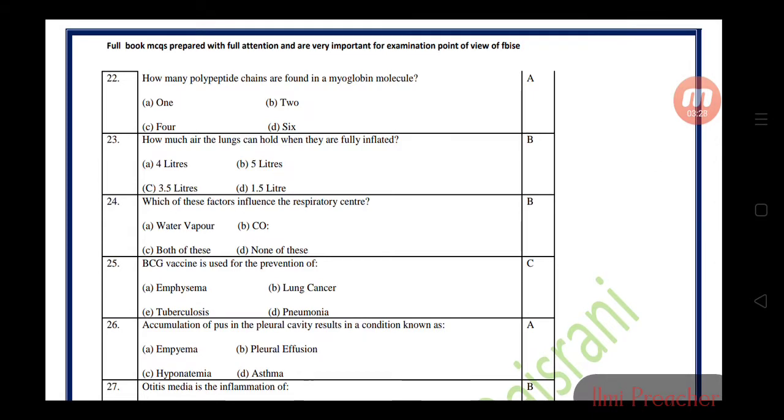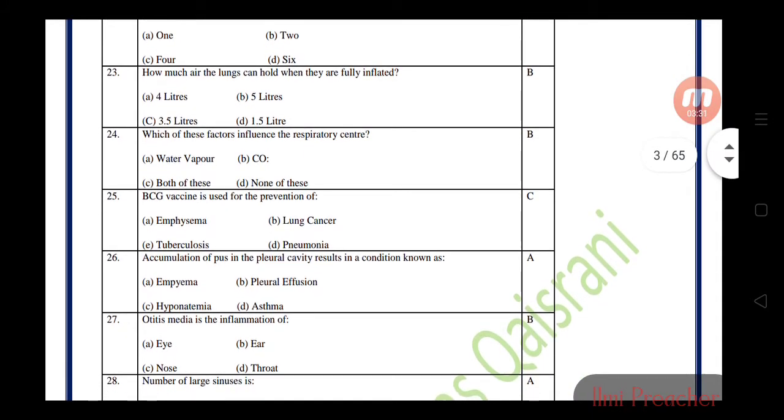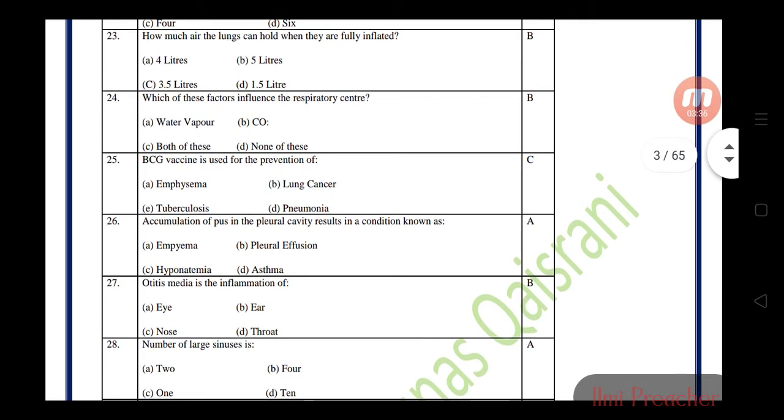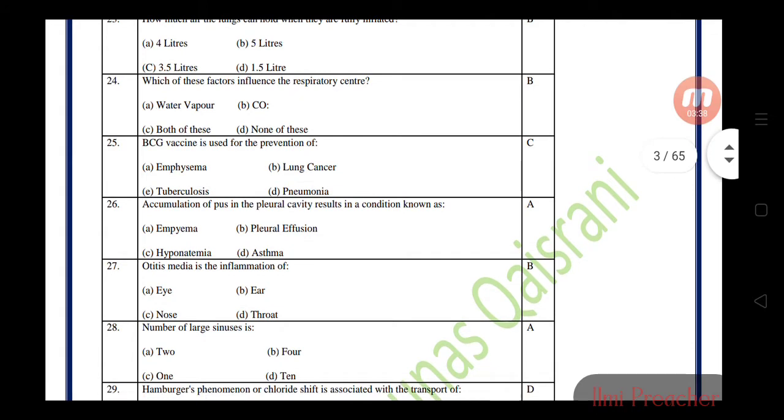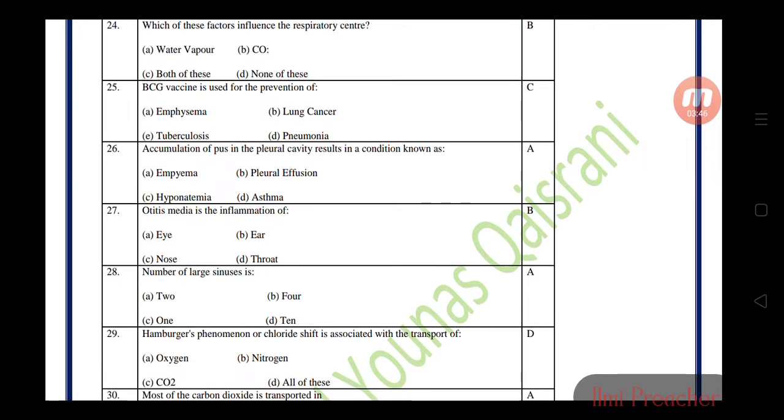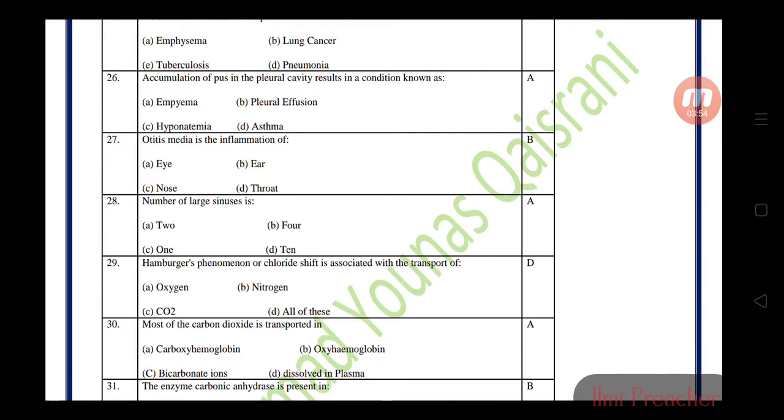How much air can the lungs hold when fully inflated? Five liters. Which factor influences the respiratory center? Carbon monoxide highly affects the respiratory center. BCG vaccine is used for prevention of tuberculosis. Accumulation of pus in the pleural cavity results in a condition known as empyema. In emphysema, the alveoli structure is blocked.